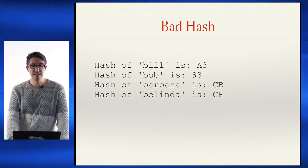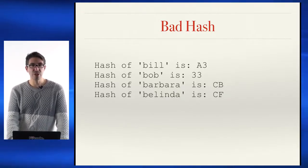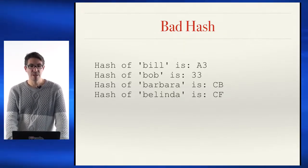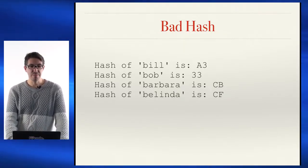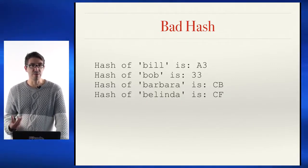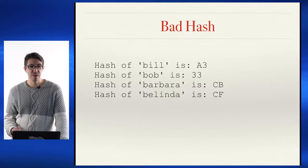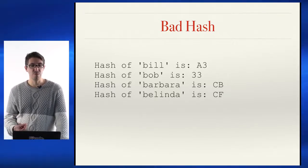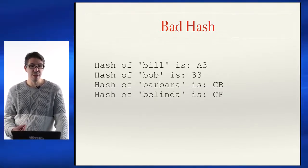Here we can see the hash of Bill is A3 — so I get some value back from this string of characters. The hash of Bob is 33, of Barbara is CB, and Belinda is CF.